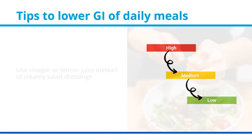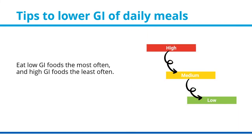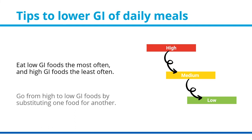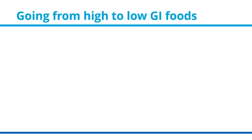Eat low GI foods most often and high GI foods least often. You can move from high to low GI foods by substituting one food for another. Here are a few examples of going from high to low GI foods.